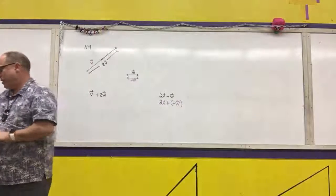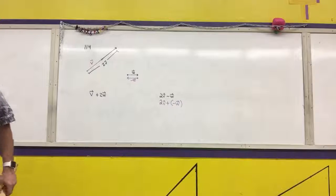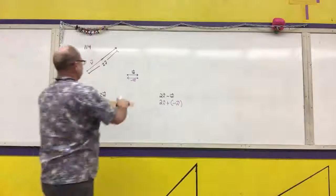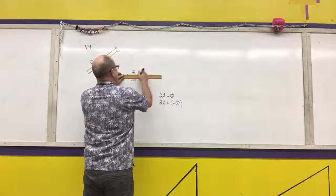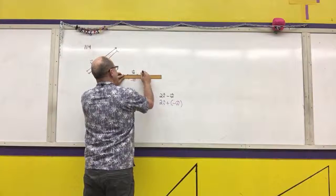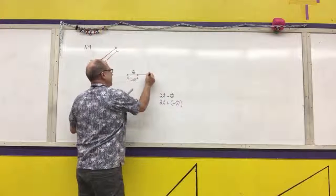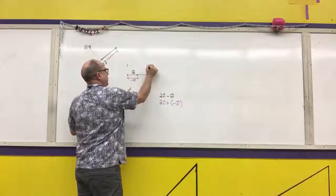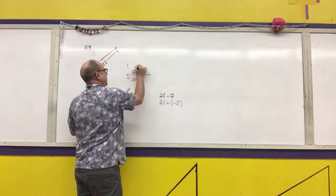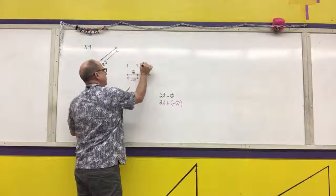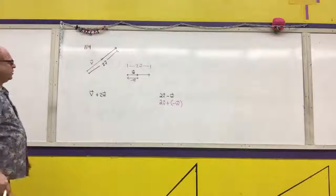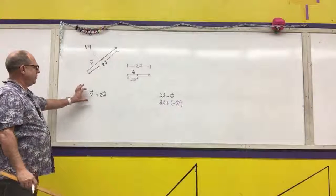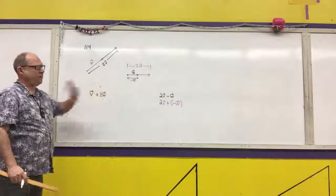Similarly, vector 2w is the vector twice as long as w going in the direction of w. With those vectors identified, I can now add the various pieces together.